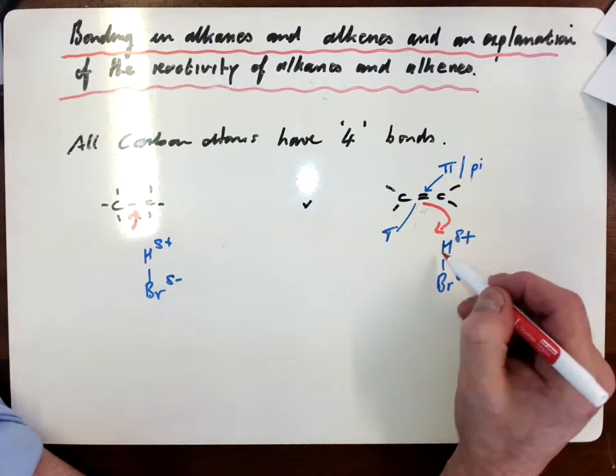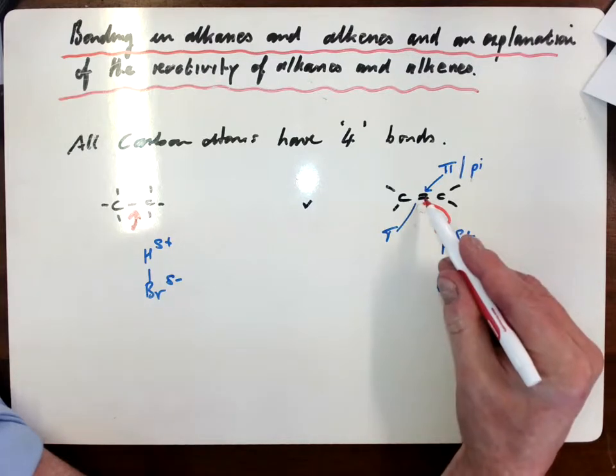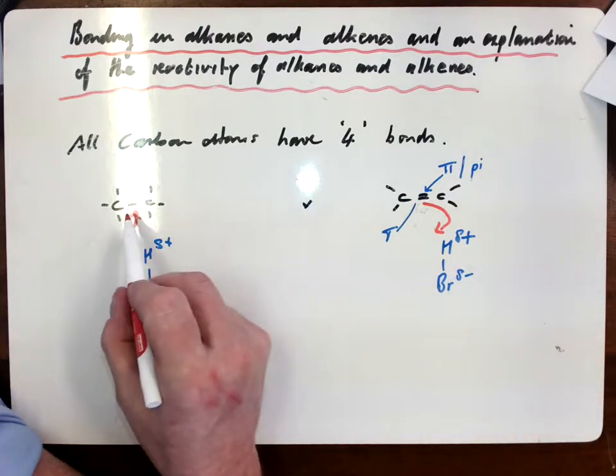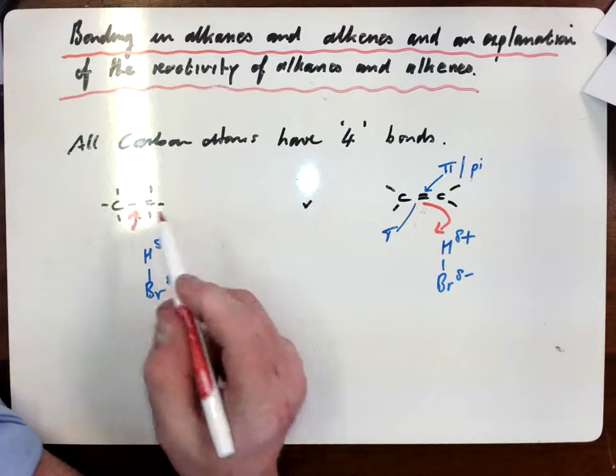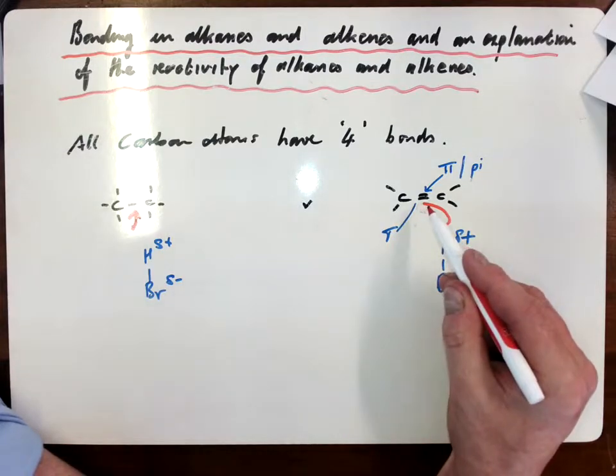So if I have an electrophile which is delta positive, it'll be attracted to this region more strongly than it would be attracted to this region, making the alkene a little bit more reactive than the alkane.